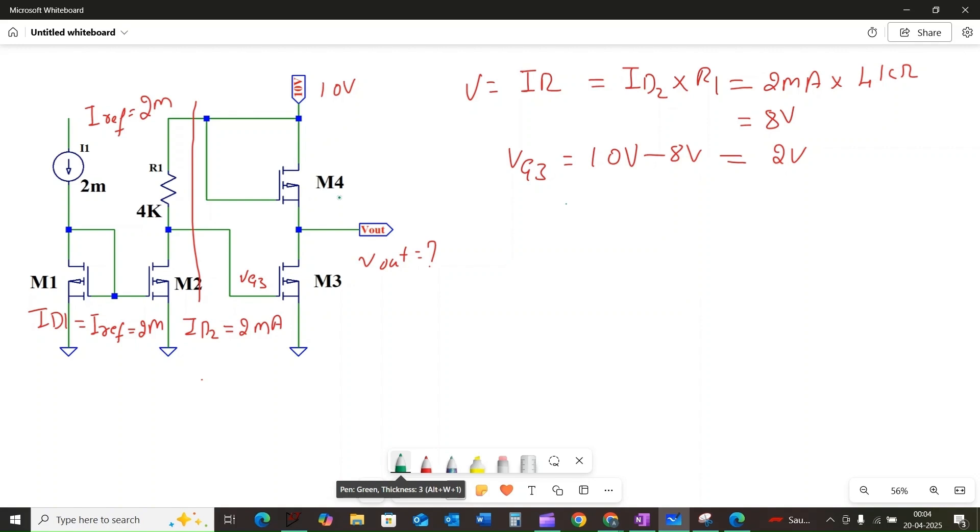Moving along, the gate of M4, VG4, is directly connected to the supply of 10 volts. So the gate voltage of M4, VG4, is equal to 10 volts.